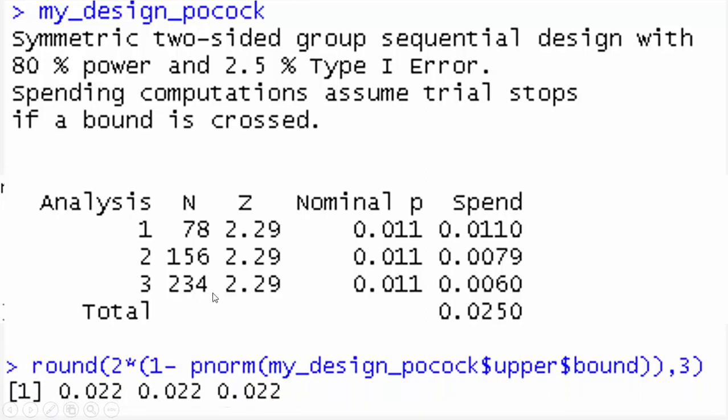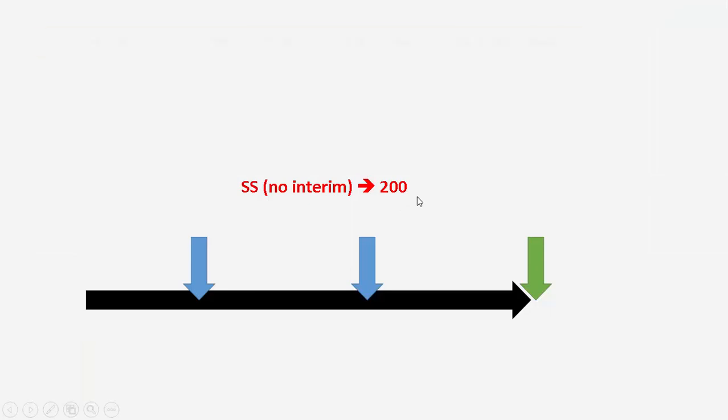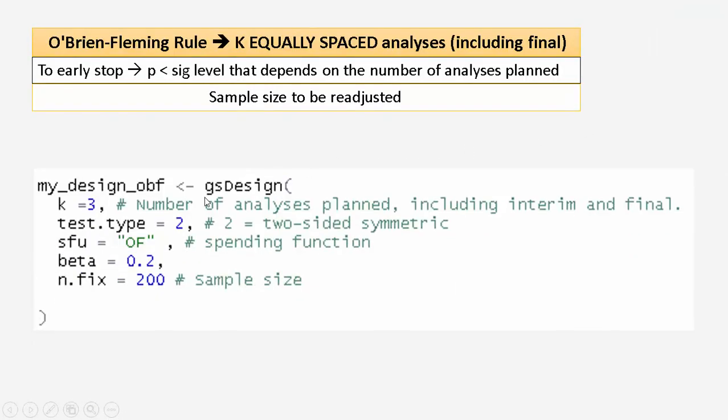Now let's look at the O'Brien-Fleming method. Three analyses, 200 patients. You will use the same function, GSDesign, and the same arguments here in the function. But you will change this, the spending function, instead of POCOCK, you will use O'Brien-Fleming, or OBF.